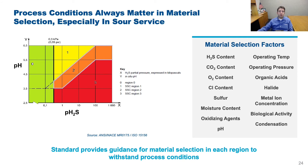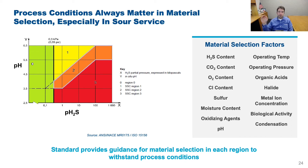Process conditions always matter when selecting a material, and several factors can make conditions worse and require a different material. The NACE ISO standard includes a graph showing four distinct regions of stress corrosion cracking, which may require different alloys. The x-axis shows partial pressure of hydrogen sulfide and the y-axis shows pH — both on logarithmic scales. Below 0.3 kilopascals of hydrogen sulfide, the process media is not in any stress corrosion cracking region regardless of pH. Above this level, the combination of sulfur and acidity changes the risk profile, and the standard provides material guidance for each region.